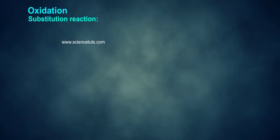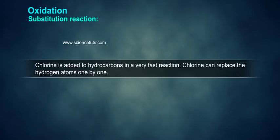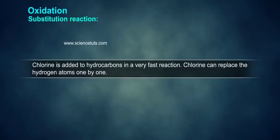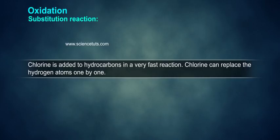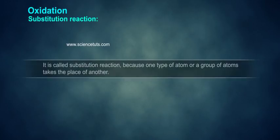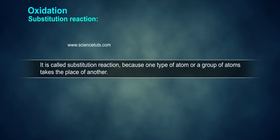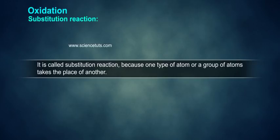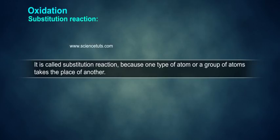Substitution reaction: Chlorine is added to hydrocarbons in a very fast reaction. Chlorine can replace the hydrogen atoms one by one. It is called substitution reaction because one type of atom or a group of atoms takes the place of another.